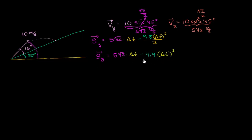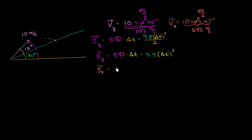So this gives us our vertical displacement as a function of time. Let's also think about our horizontal displacement as a function of time. Our horizontal displacement equals our horizontal velocity, which is 5√2, times our change in time.